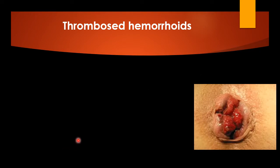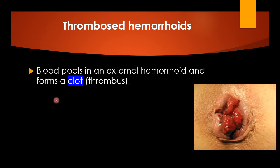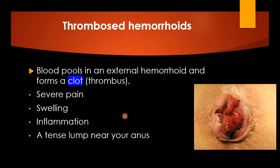The third category is thrombosed hemorrhoids. When blood in the external hemorrhoid veins clots, the hemorrhoid is known as thrombosed. This usually causes severe pain in the anal region, swelling, inflammation, and a tense lump near the anus. Thrombosed hemorrhoids are usually found in external hemorrhoids.